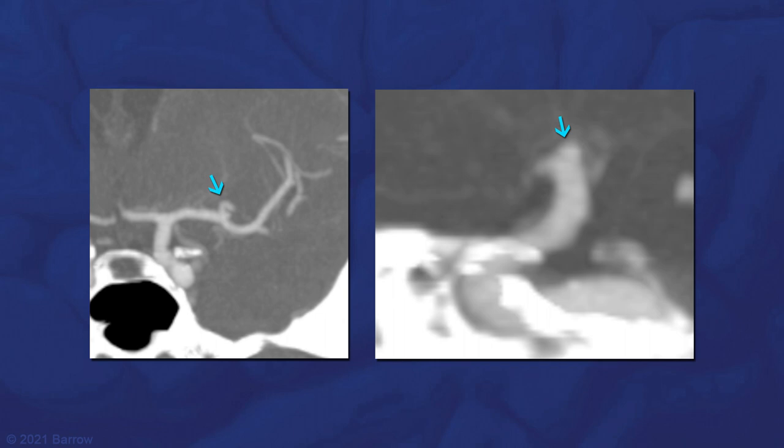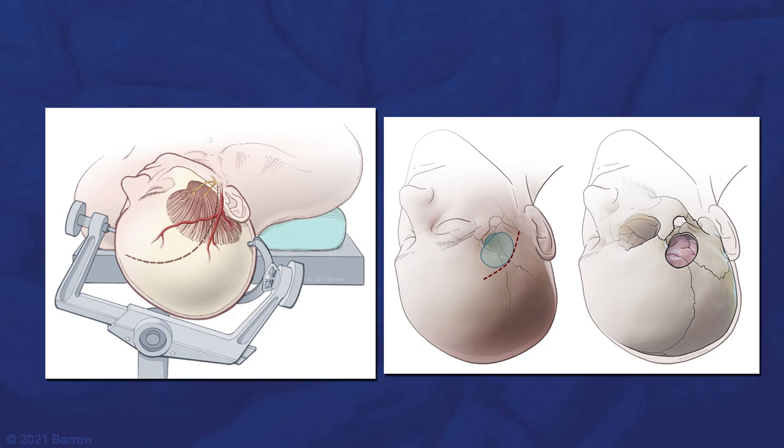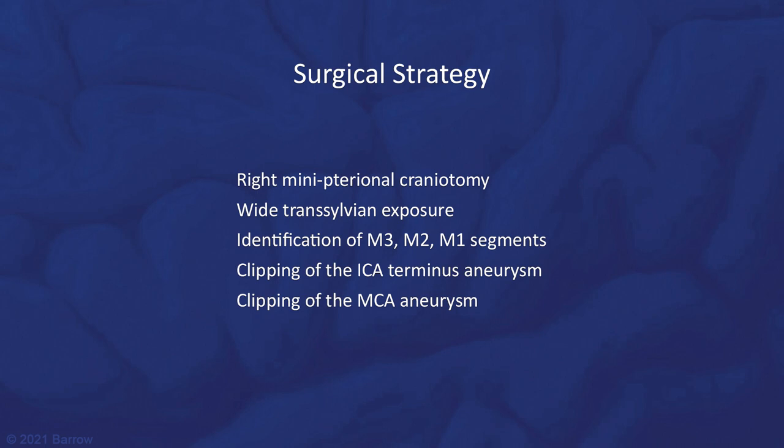These illustrations show the patient position, skin incision, and craniotomy used. The surgical strategy consisted of a right mini-pterional craniotomy, wide sylvian split, identification of the middle cerebral artery segments, clipping of the deeper internal carotid artery bifurcation aneurysm, and then clipping of the more superficial middle cerebral artery aneurysm.